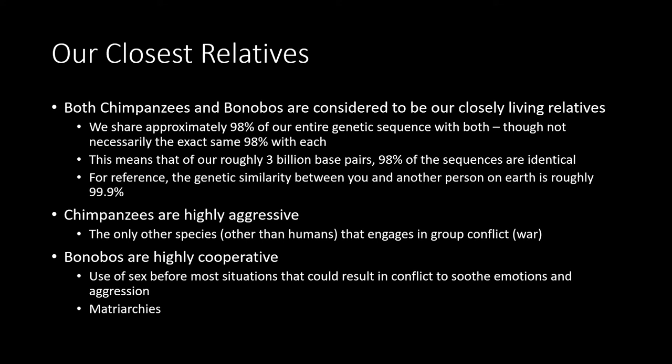Considering our closest relatives — chimpanzees and bonobos — both share approximately 98% of their genetic sequences with us. Of all the sequences of genetic base pairs that we have, about 98% are identical across these two animals. Human beings along with the apes have roughly about 3 billion base pairs in our genetic sequence, and about 98% of these sequences are identical — though estimates range from about 96% to 98% depending on what parts of the sequence you're examining.